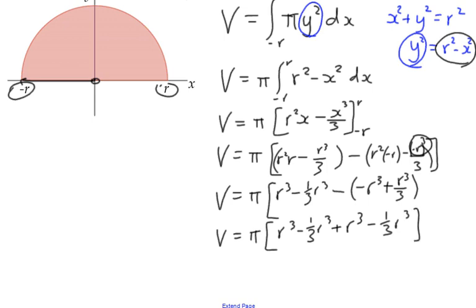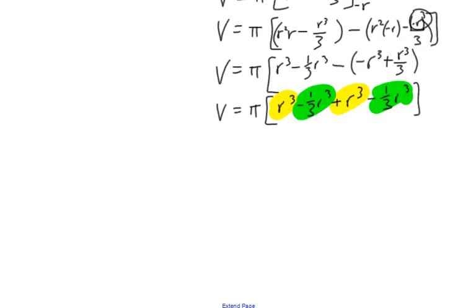Which gives us, effectively, if we've got r³ plus r³ is 2r³, but then we've got minus a third and minus a third r³. So effectively, we're talking about V equals π times 2r³ minus 2 thirds r³.